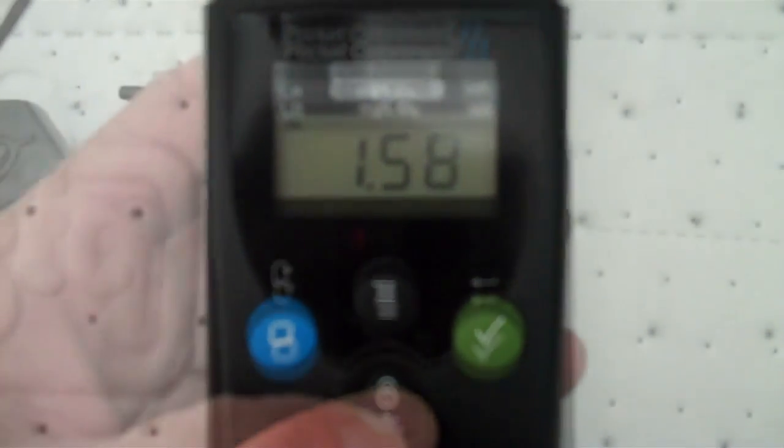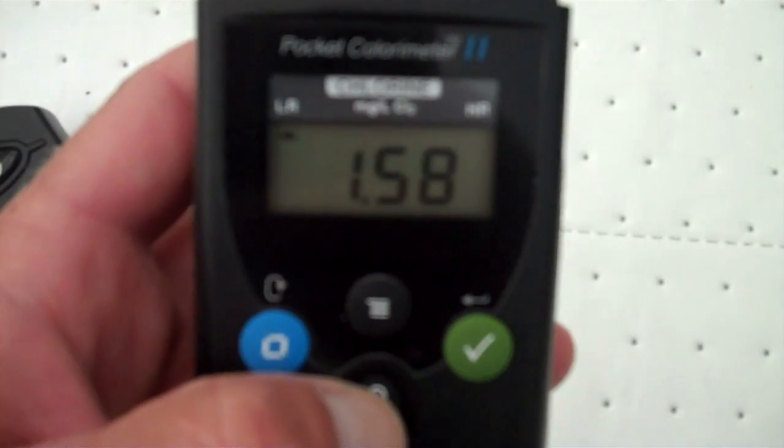Now, as far as the menu functions go on the colorimeter here, you have a power button here which I'll turn off for a second. So we've powered off the unit just by a simple quick touch of this power button here, which is also a backlight. You can click that once and it comes on.